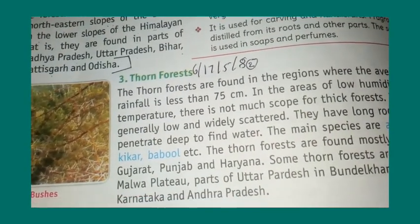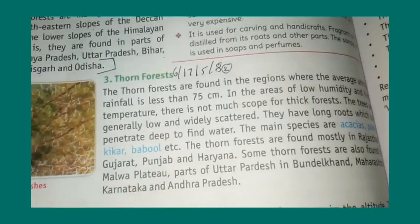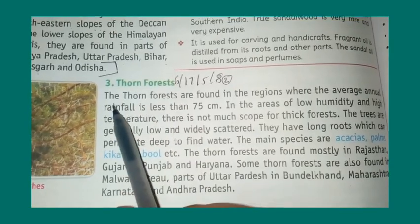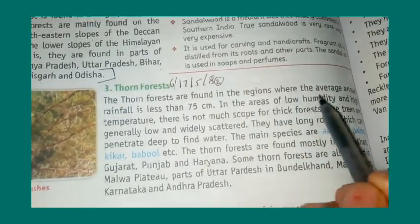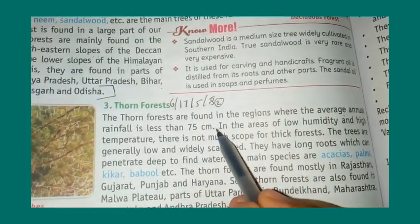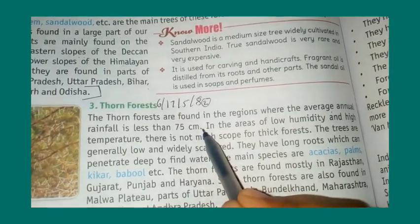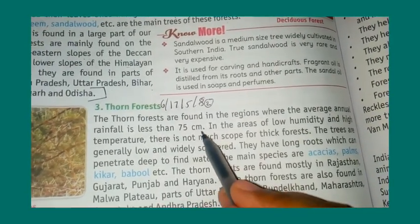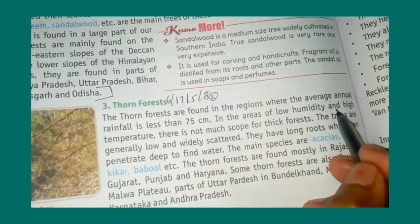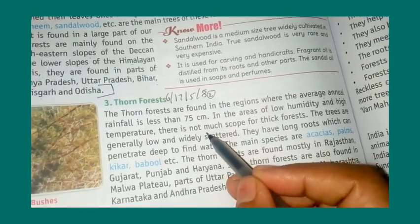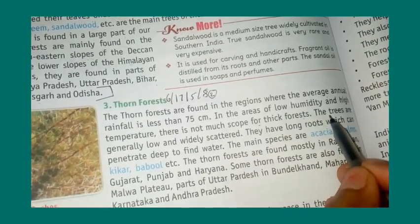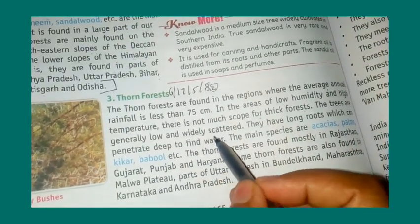We will continue our chapter 17. We're going to study thorn forests. Thorn forests are found in regions where the average annual rainfall is less than 75 centimeters. These forests are found in areas of low humidity and high temperature. There is not much scope for thick forests, and the trees are generally low and widely scattered.